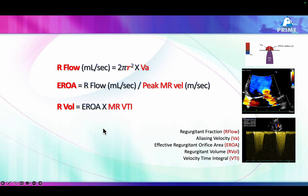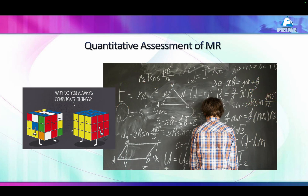You can also calculate the regurgitation volume or regurgitation fraction. But don't you think it's complex? I also think the same. In daily practice, it becomes very challenging to do PISA properly because the hemisphere is not uniform, not spherical, not clearly visualized — there are multiple issues and it is time consuming.